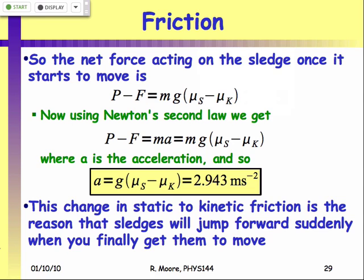Last time we quickly went through this example of a sledge setting off and we talked about static and kinetic or dynamic friction, and when there's a difference between them you end up with a sort of sudden jerk when you set off, because the friction force suddenly lowers and so you go from zero acceleration to a sudden finite value. This is why you get a sudden start when pulling something.